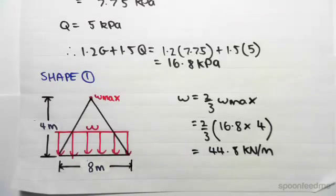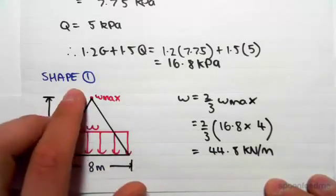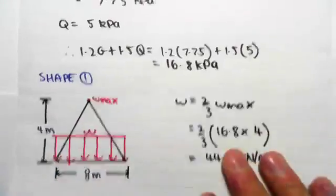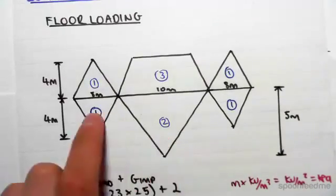Hey guys, I'm just continuing straight on from the previous video. We now found the equivalent UDL for shape one, so we now need to move on to shape two and shape three. For shape two we have a triangle.